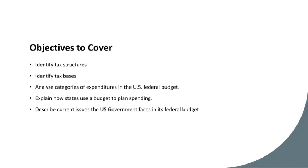While federal budgeting captures much attention, state governments also play a critical role in fiscal policy through their budget planning processes. State budgets allocate resources to essential services such as education, health care, and public safety. Governors and state legislators collaborate to craft budgets that address the needs of their constituents while adhering to fiscal constraints. State budget planning involves forecasting revenue streams, prioritizing spending, and navigating competing demands within limited resources.